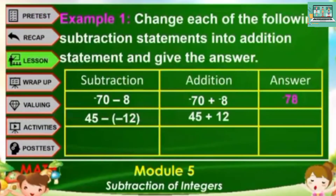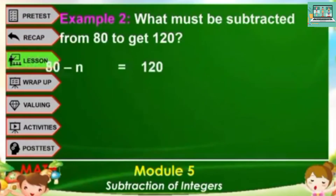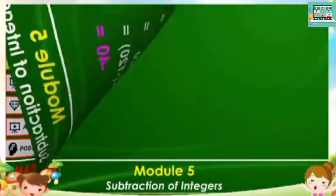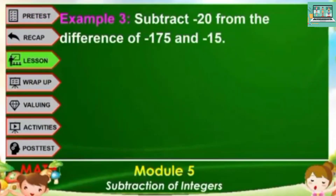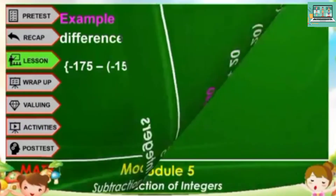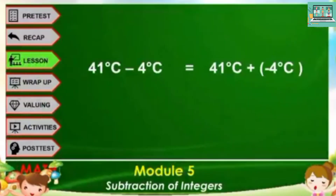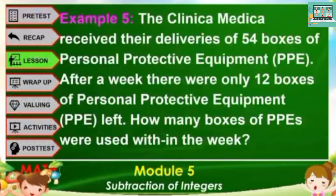Example 1: change each of the following subtraction statements into addition statements and give the answer. Example 2: what must be subtracted from 80 to get 120? Example 3: subtract negative 20 from the difference of negative 175 and negative 15. Example 4: the temperature of a COVID-19 patient was recorded at 41 degrees Celsius. After an hour of taking medication, the patient's temperature was 4 degrees lower — what was the temperature then? Example 5: a clinic received 54 boxes of PPE; after a week only 12 boxes remained. How many boxes were used within the week?